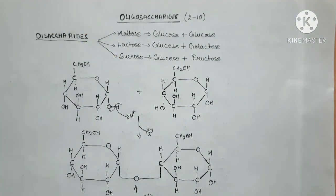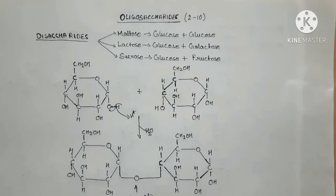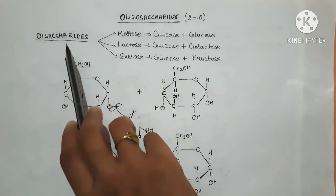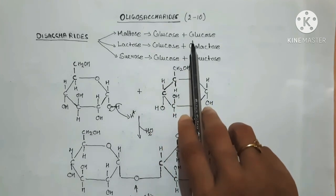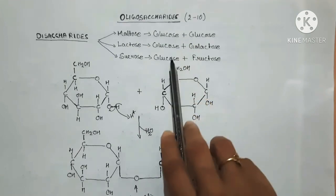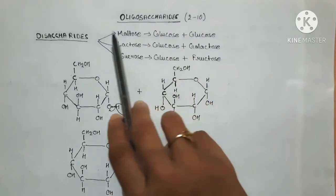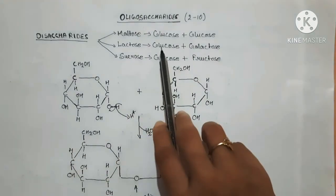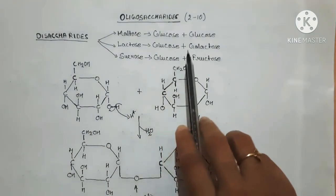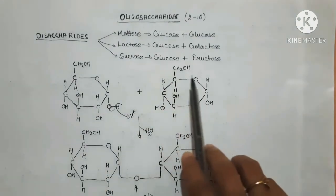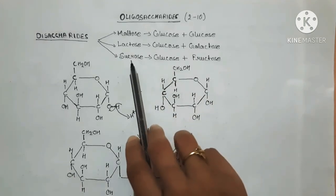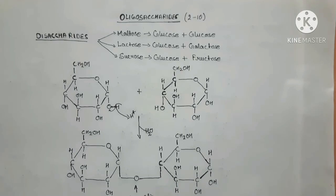Disaccharides are oligosaccharides containing 2 monosaccharides. Examples include maltose, lactose, and sucrose. Maltose is a disaccharide formed by the condensation of 2 glucose units. Glucose and galactose attach to form the disaccharide lactose. Glucose and fructose condense to form the disaccharide sucrose.